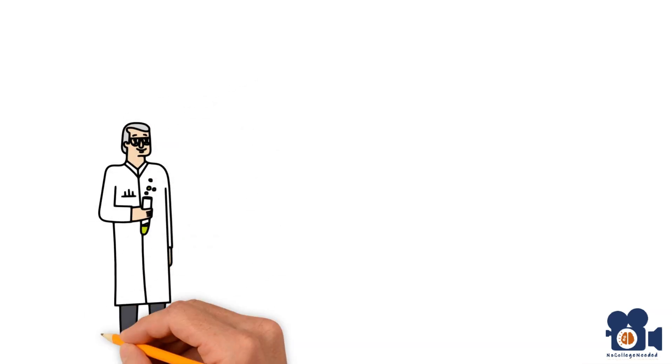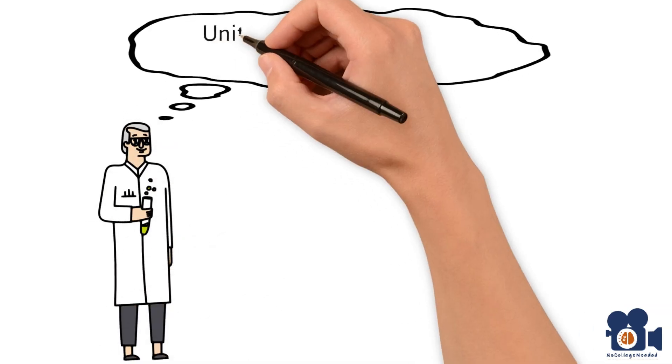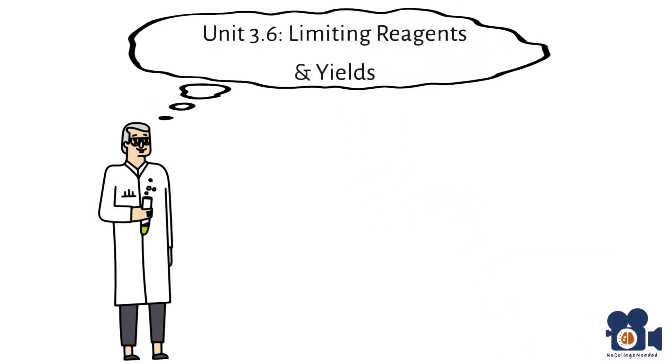Today we're delving into unit 3.6 of the first half of general chemistry, which covers limiting reagents and yields. If you find value in this video, please like it and let people know about the channel because it really does help spread the knowledge.